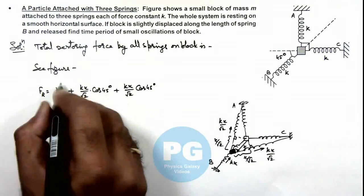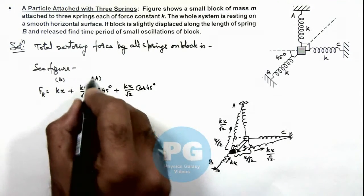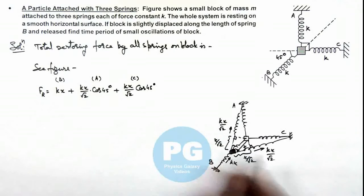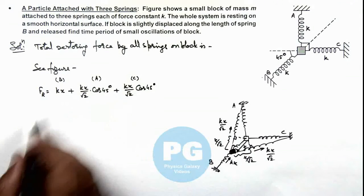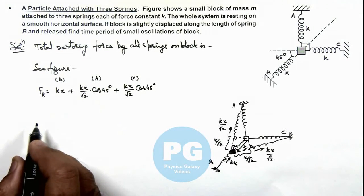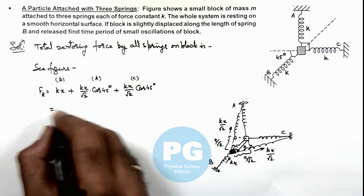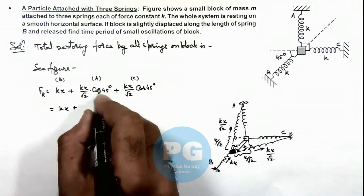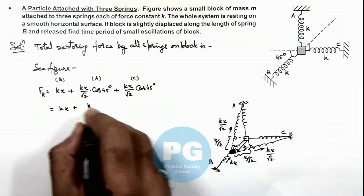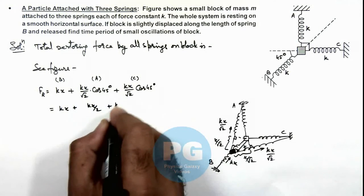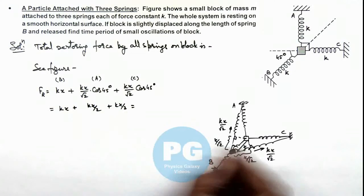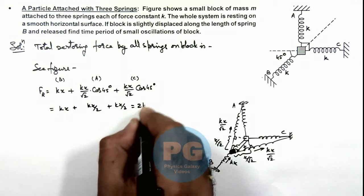This is due to spring B, this is due to A, and this is due to C. Obviously, as A and C are symmetric, the forces by A and C on the block are equal. On simplifying: this is kx plus kx/2 plus kx/2. So the total restoring force acting on the block is 2kx.